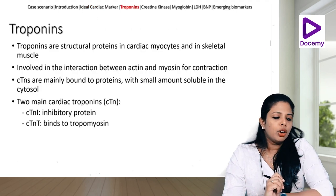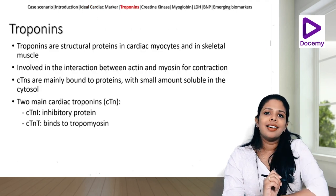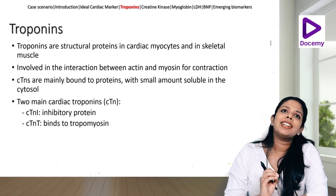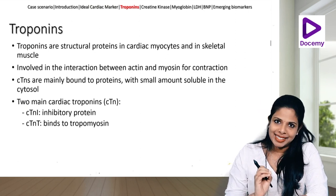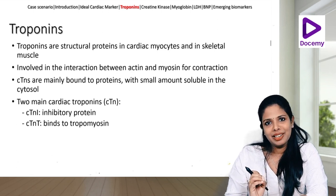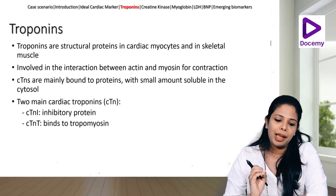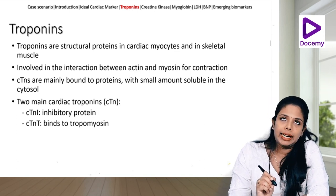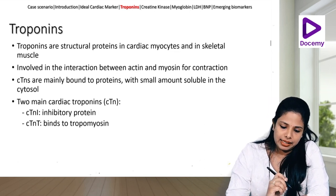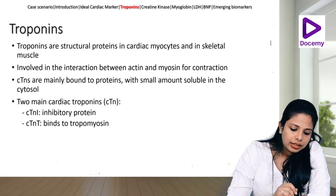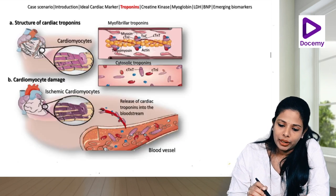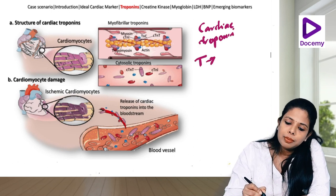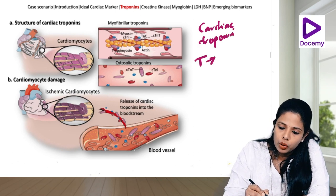Coming to troponins. Troponins are the cardiac biomarker of choice currently and have eclipsed all other markers like CKMB and myoglobin in the diagnosis of MI. Troponins are basically structural proteins in cardiac myocytes and skeletal muscle. We have three types of cardiac troponins: cardiac troponin T, which is bound to tropomyosin; troponin I (inhibitory), which is bound to actin; and troponin C, which is bound to calcium.